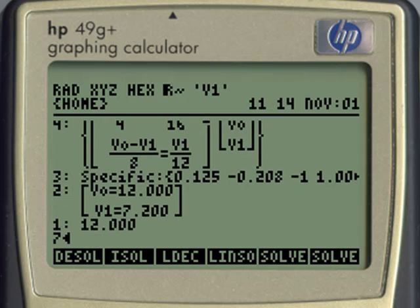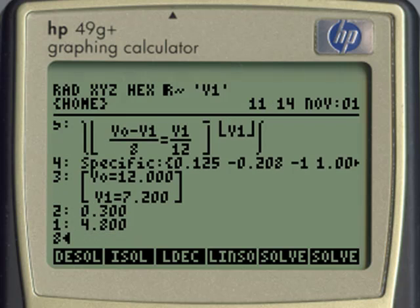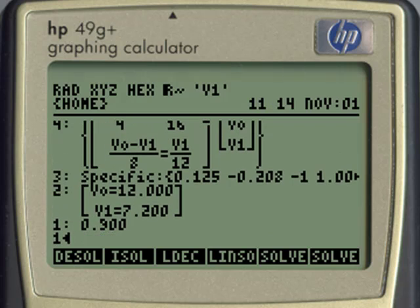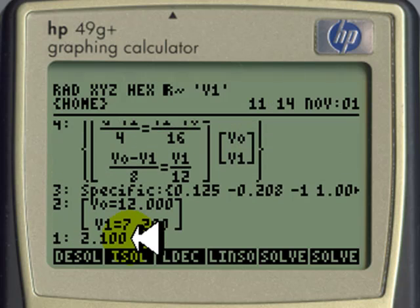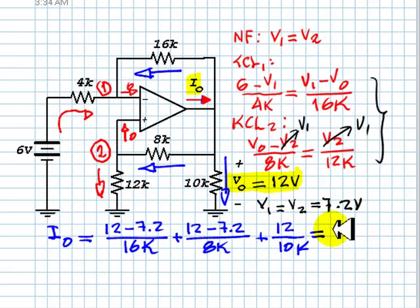12 enter, 7.2 subtract, enter, 16 divide, swap, 8 divide, add, 12 enter, 10 divide, add, 2.1 milliamps. And that is that current.